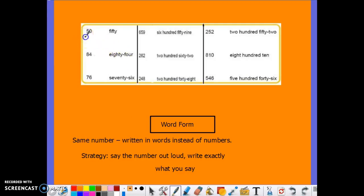Written word form is when you take the standard form number and you write it out in words. The same number written in words instead of numbers. The strategy we will use to learn how to write written word form is saying the number out loud and then writing exactly what you say.